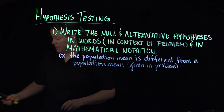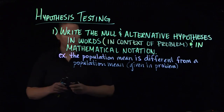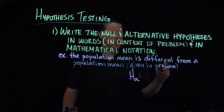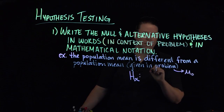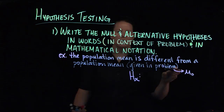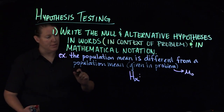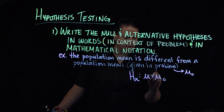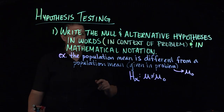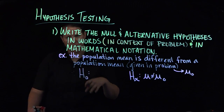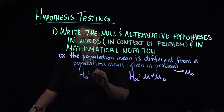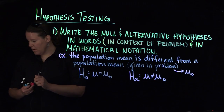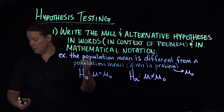If it's different, then the alternative hypothesis is that the population mean given in the problem — which we're going to call mu-zero — the mu that we observe from this test is going to be different than mu-naught, the one given in the problem. That means the null hypothesis, which is exactly the opposite of the alternative, is that mu equals mu-naught.